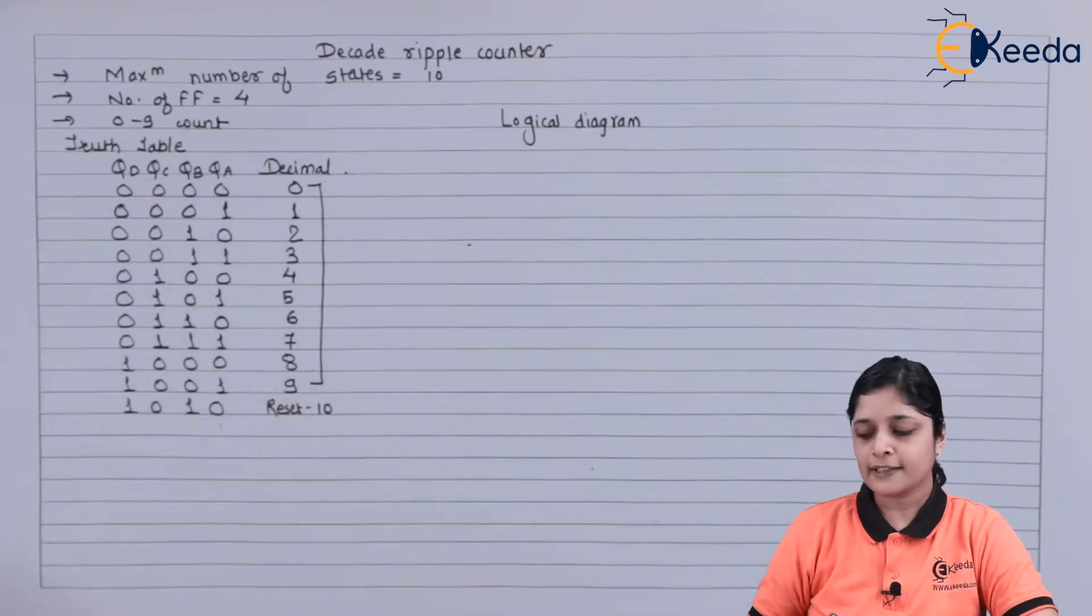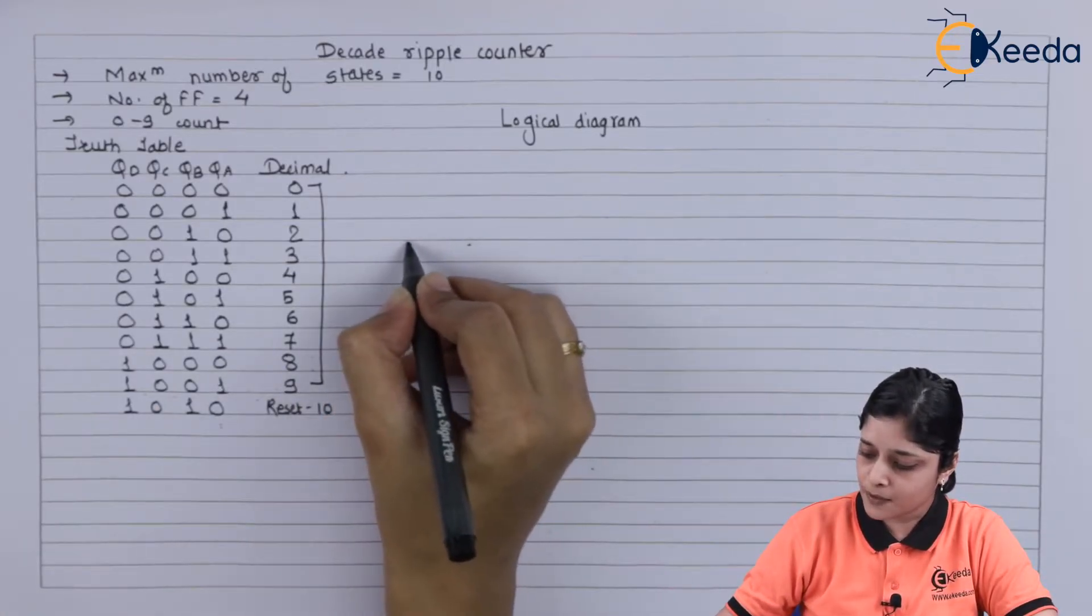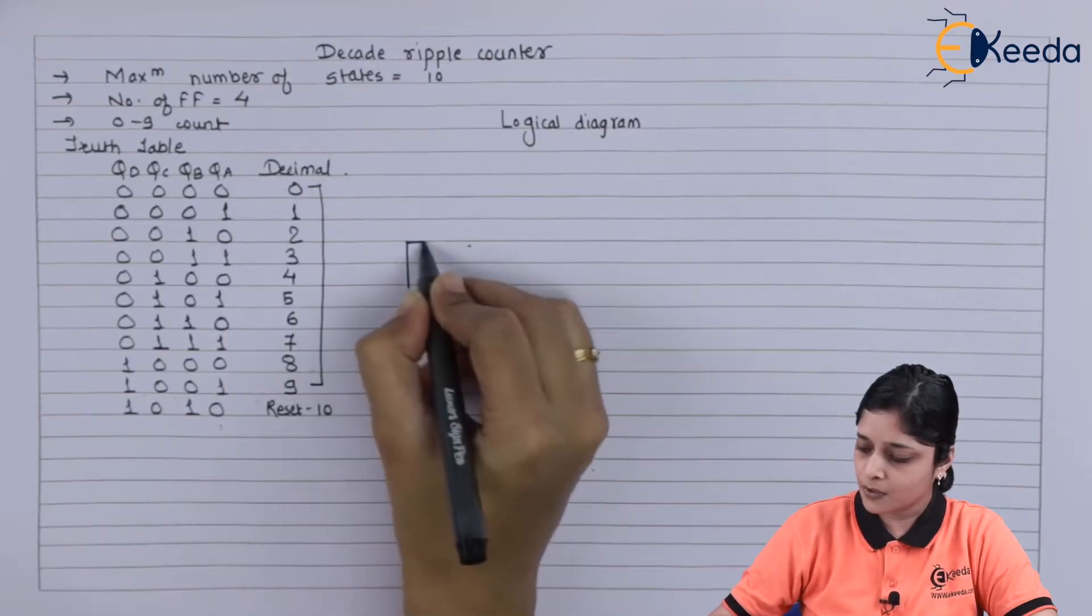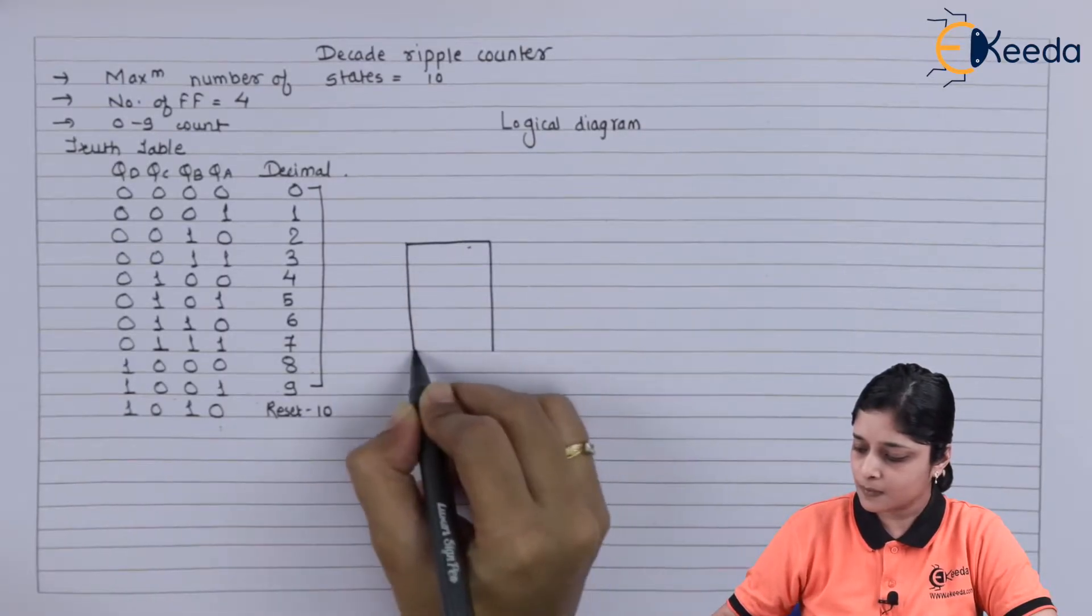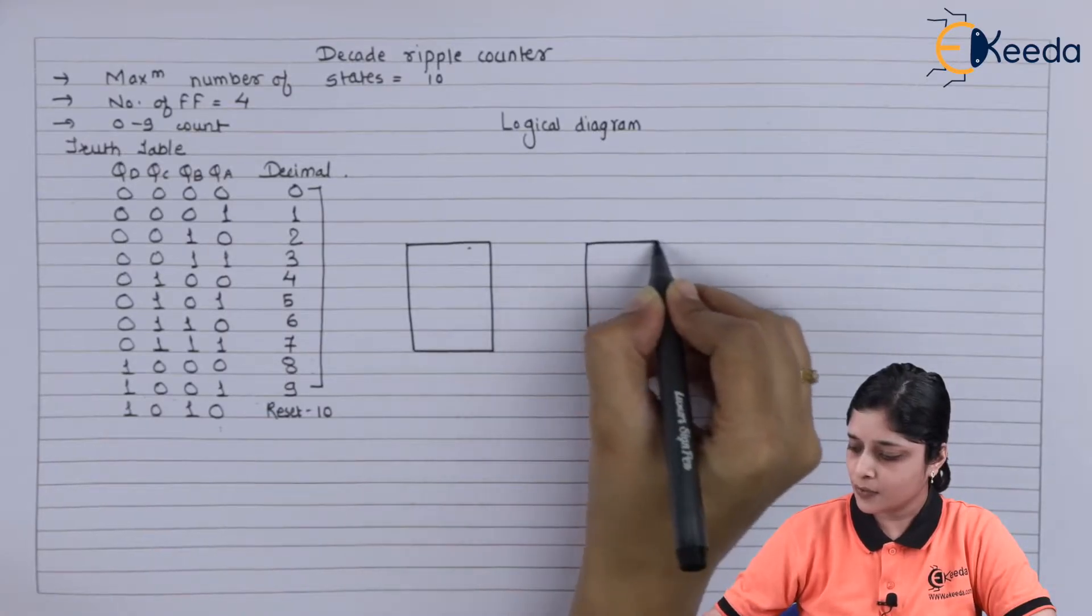it should consist of 4 number of flip flops. So we will draw here 4 number of flip flops. This becomes your first flip flop. This is your second one.